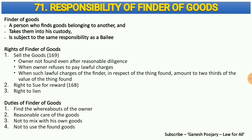The first right is to sell the goods. Section 169 discusses selling under three circumstances: first, the finder tried to find the owner but was unable to even after reasonable diligence; second, the owner was found but refuses to take the goods; and third, the finder is spending up to two-thirds of the actual value of the goods on repairs or similar costs. In these three circumstances, the finder can sell the goods under section 169.